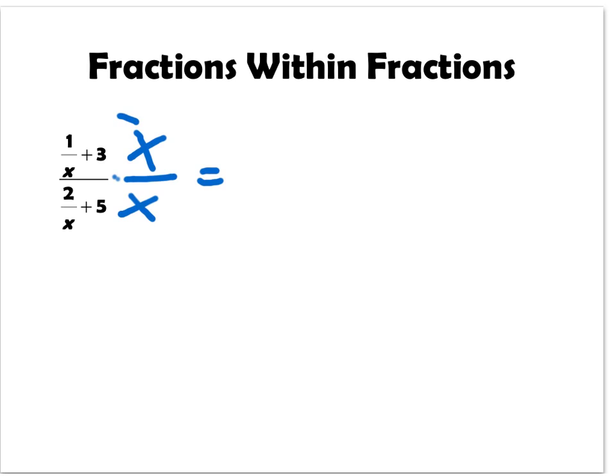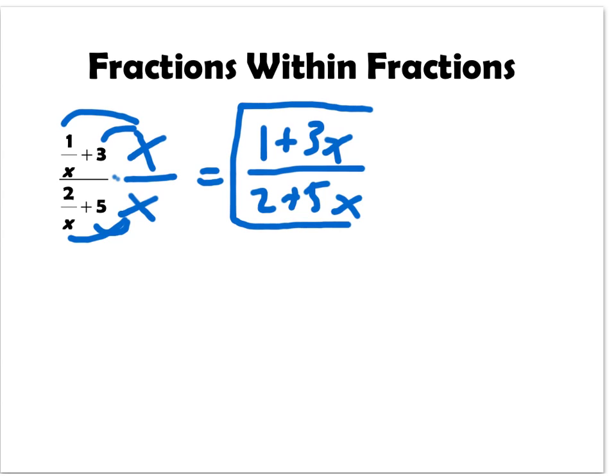When we distribute in the numerator, we have x times 1 over x, which gives us 1, and then x times 3 gives us 3x. In the denominator, we distribute x times 2 over x to get 2, then plus 5x. That completely gets rid of those fractions within fractions. There's nothing more that we can factor, so this is our simplified algebraic expression.